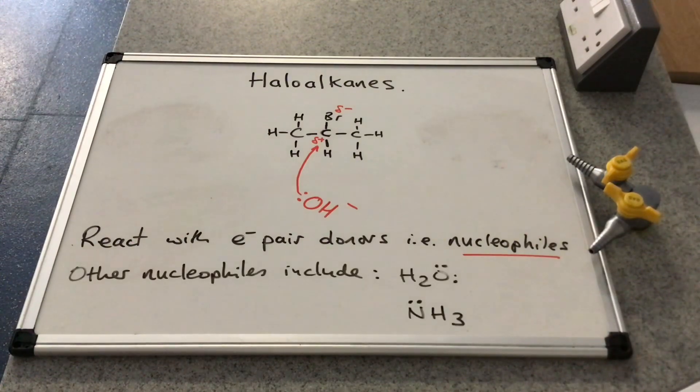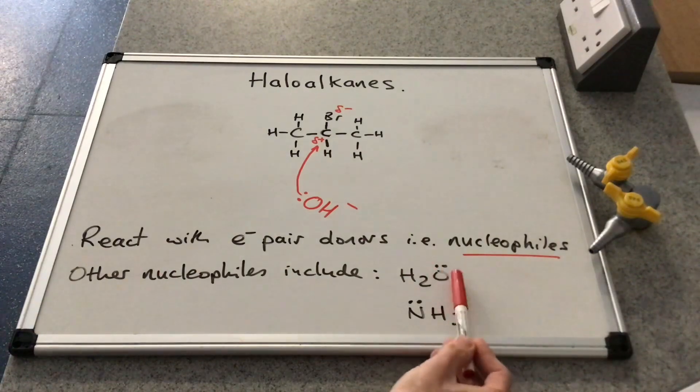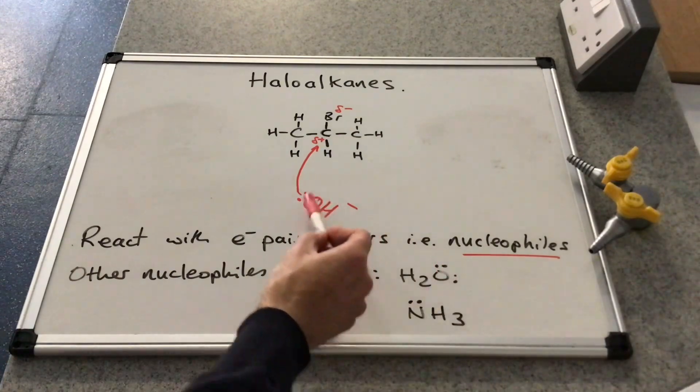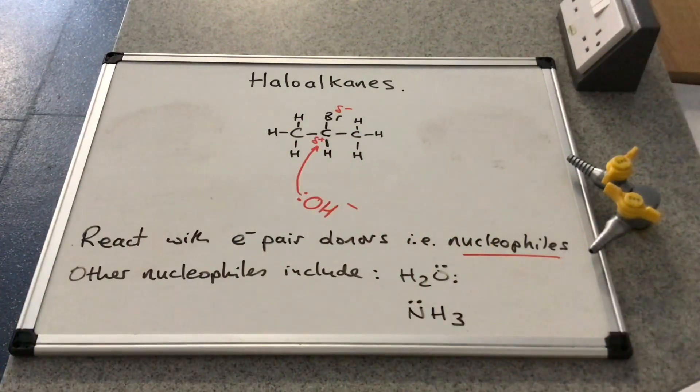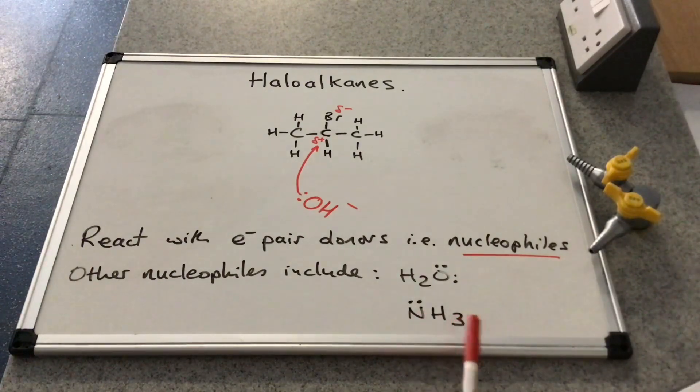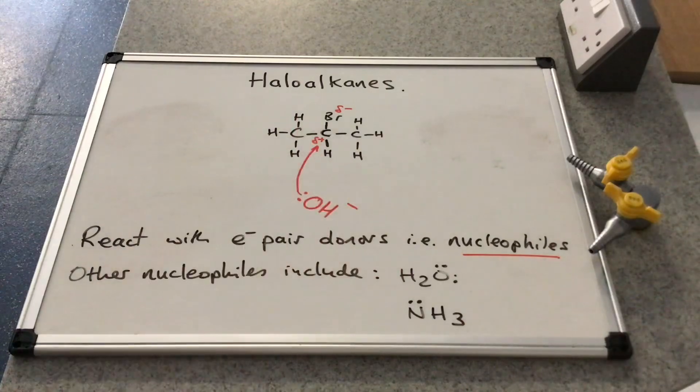And of course, other nucleophiles exist. There's a couple more. Water, you can see, has obviously the two lone pairs on the oxygen atom. So if you had H2O there, the lone pair could be attracted to that slightly positive carbon. Likewise, the ammonia molecule, you've got a lone pair of electrons on the nitrogen, that could do the same.